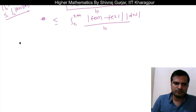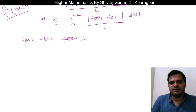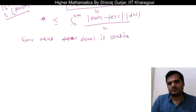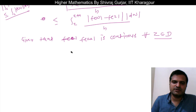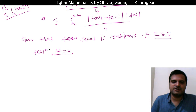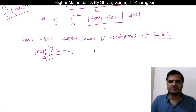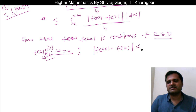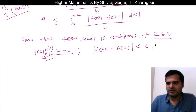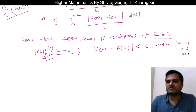Now, it is given that f(z) is continuous for every z belonging to D. So f(ω) will be continuous at ω = z, because it is everywhere continuous. By the definition of continuity, we can say that |f(ω) - f(z)| is less than epsilon for a given epsilon greater than zero, whenever |ω - z| is less than delta, where delta is a function of epsilon.